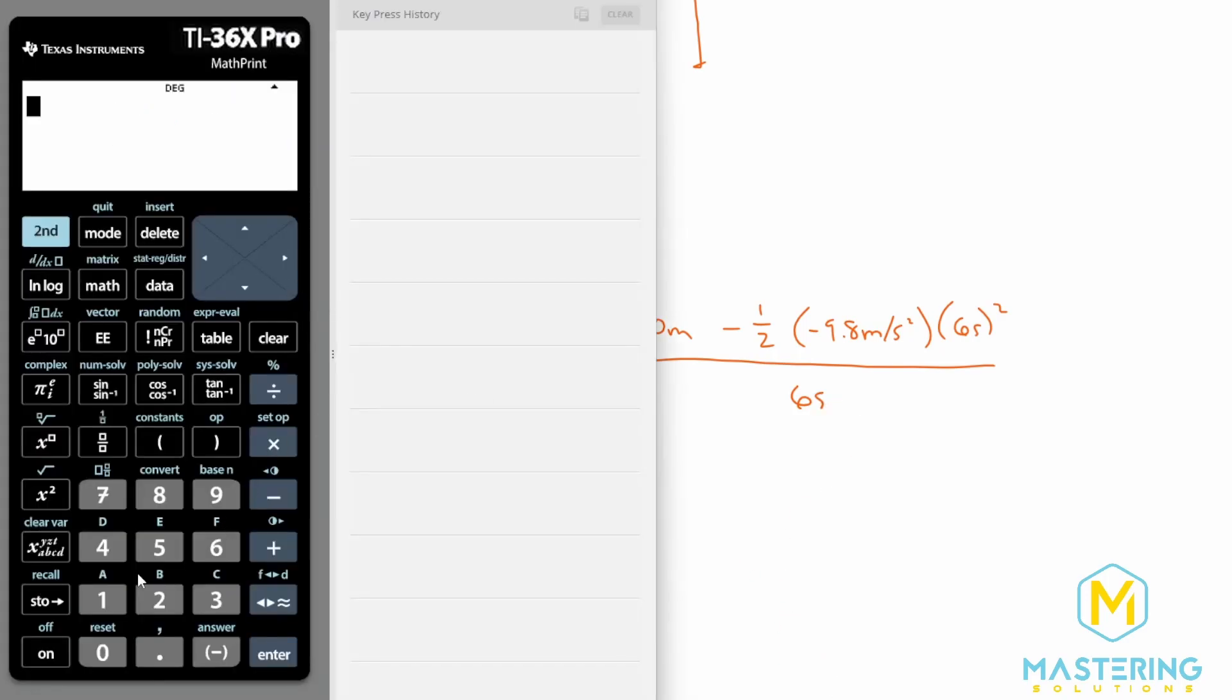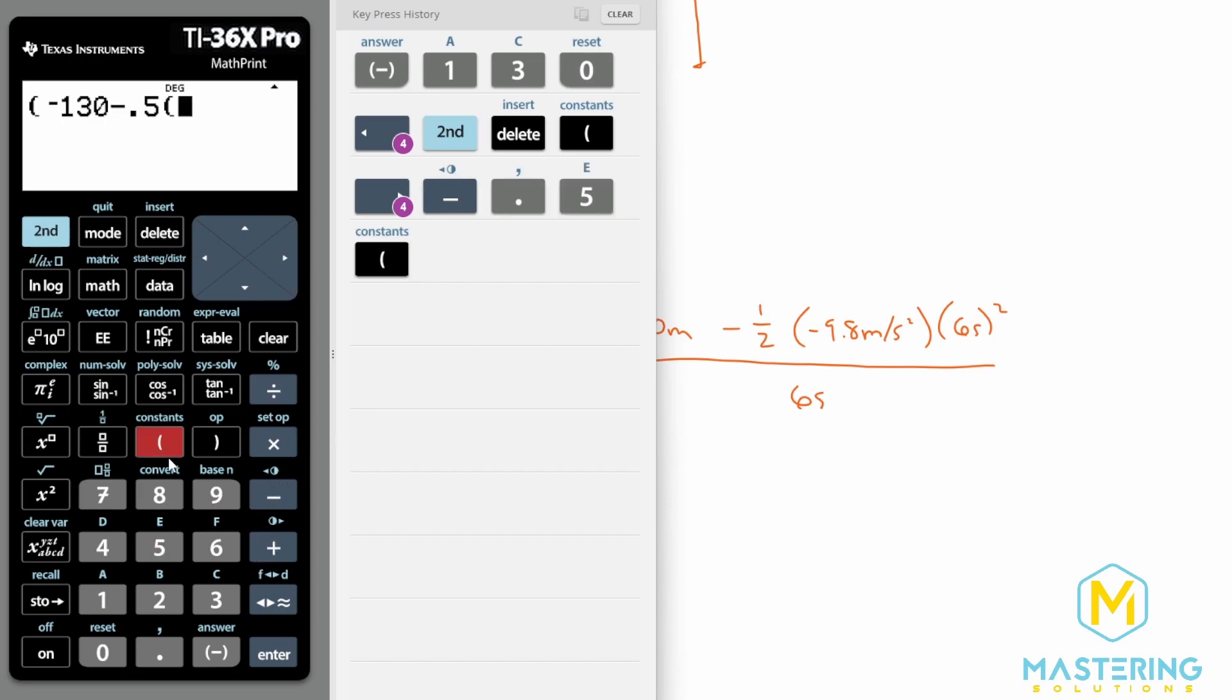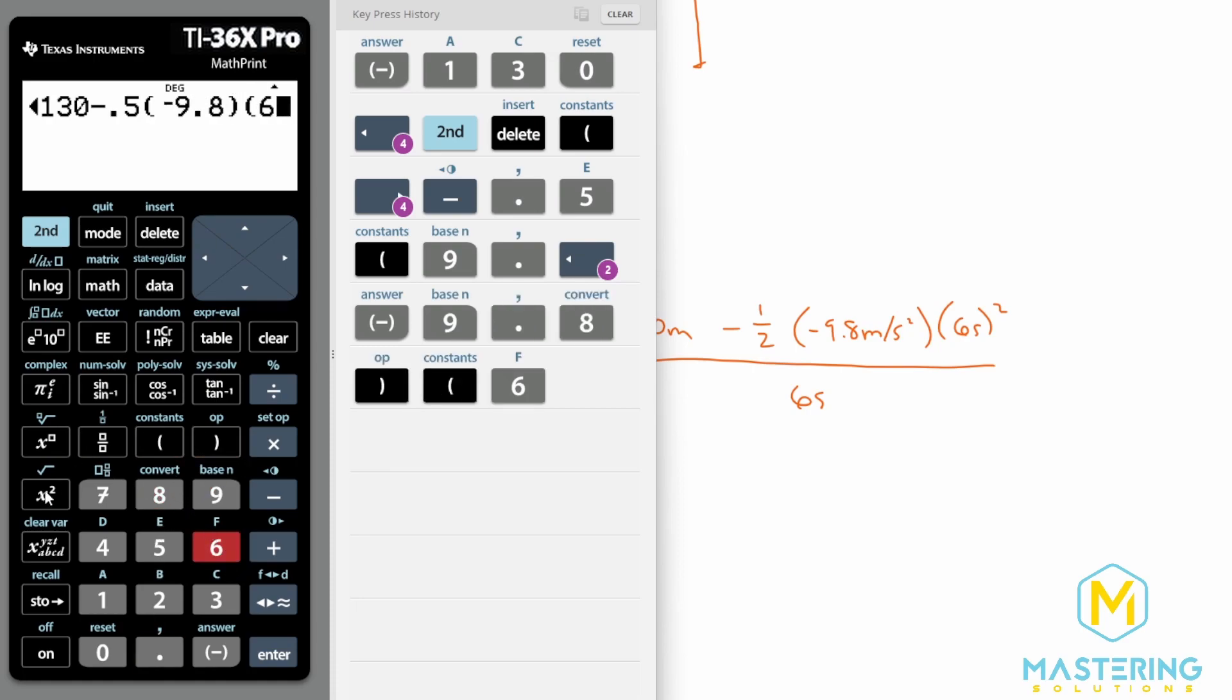Now when we go to our calculator, we have negative 130 minus, let's put all this in parentheses, so negative 130 minus 0.5 times negative 9.8 times 6 squared.